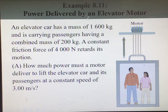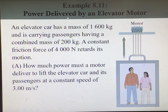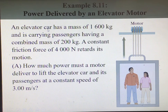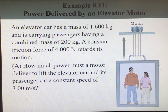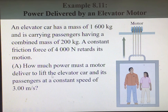Now let's look at example 8.11: the power delivered by an elevator motor. An elevator car has a mass of 1,600 kilograms and is carrying passengers with a combined mass of 200 kilograms. A constant friction force of 4,000 newtons retards its motion. How much power must a motor deliver to lift the elevator car and its passengers at a constant speed of 3.00 meters per second?